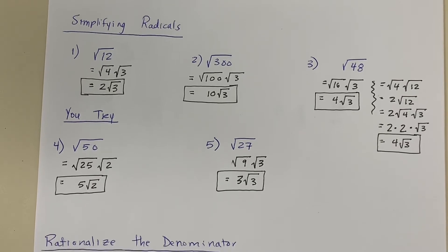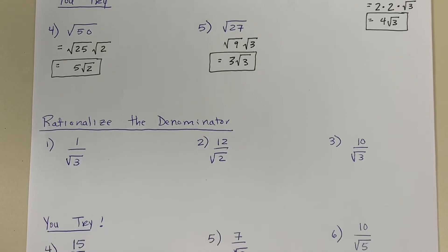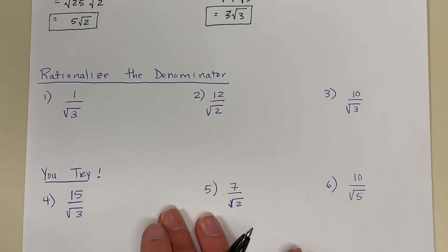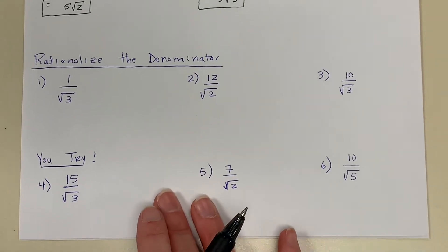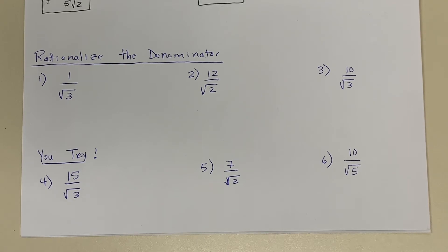In addition to simplifying radicals, we're going to have to do something called rationalizing the denominator. Within a fraction, you can never have a radical or a square root left in the denominator. So we go through a process called rationalizing so that my final answer has no square roots at the bottom of the fraction.